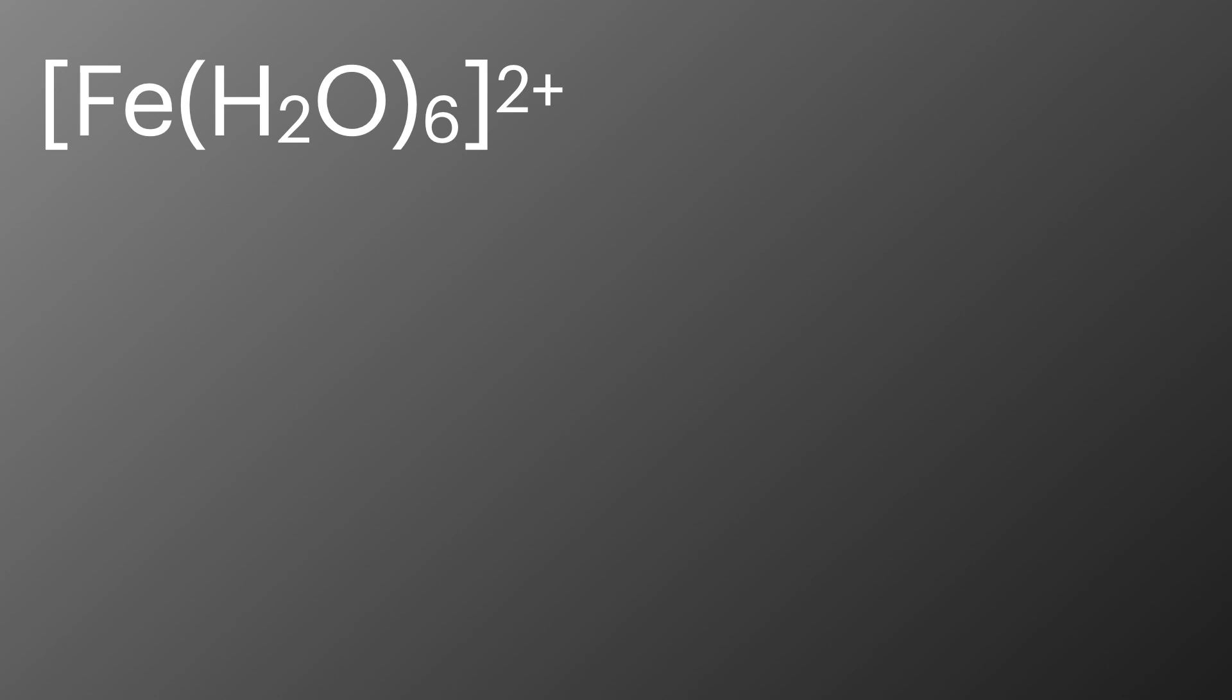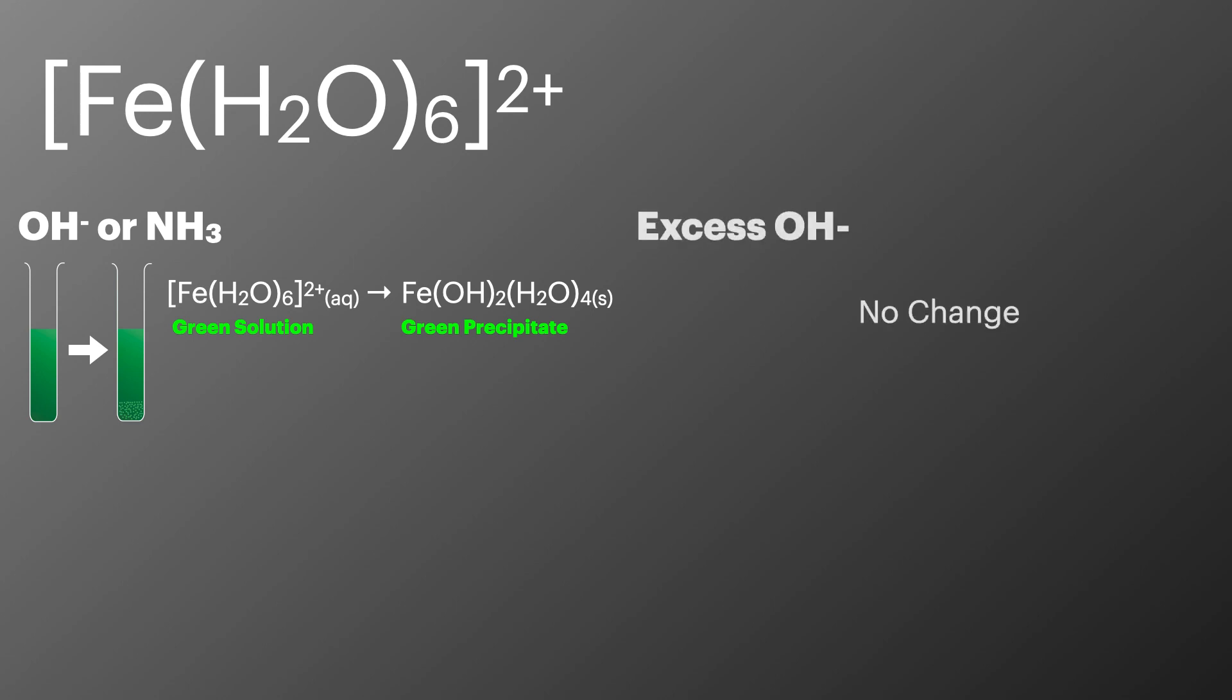If we consider the iron 2 aqua complex then it's hydrolyzed by reaction with hydroxide ions or ammonia and forms a green precipitate. There's no change when we add it to an excess of hydroxide ions and there's still no change when we add it to an excess of ammonia.